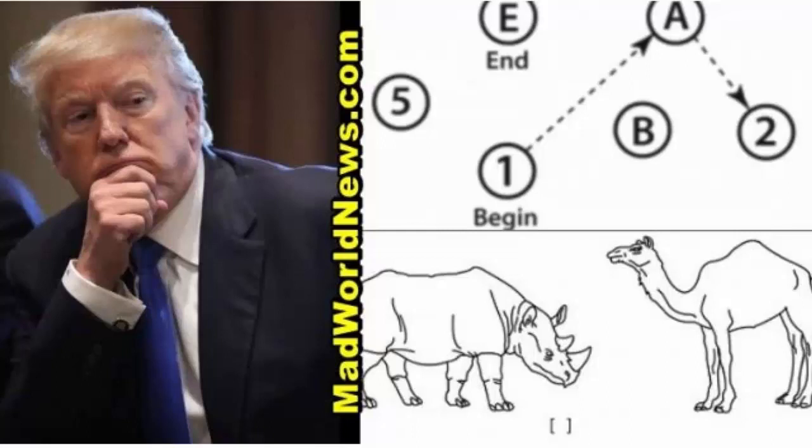Question 8: Verbal Fluency. The examiner reads out a letter, such as F, and the patient has to think of words that start with that letter. The aim is to reach 11 words or more in 60 seconds. The words cannot be proper nouns, like Bob or Boston, and the words cannot be the same sounding word but with different suffixes, like love, lover, loving. One point is given if 11 words or more are reached in one minute.